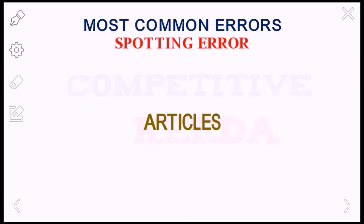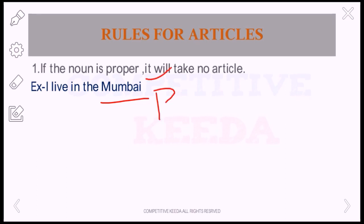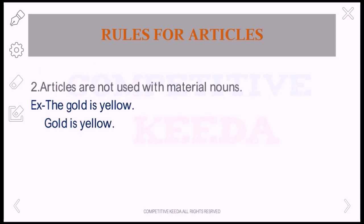Now comes articles — a very important part. The first rule: if the noun is a proper noun, it will take no article. A proper noun is a name used for a particular person, place, or organization. For example, 'I live in the Mumbai' is wrong — Mumbai is a proper noun, so we say 'I live in Mumbai.' The next rule: articles are not used with material nouns like gold, silver, copper. So 'The gold is yellow' is wrong; the correct form is 'Gold is yellow.'